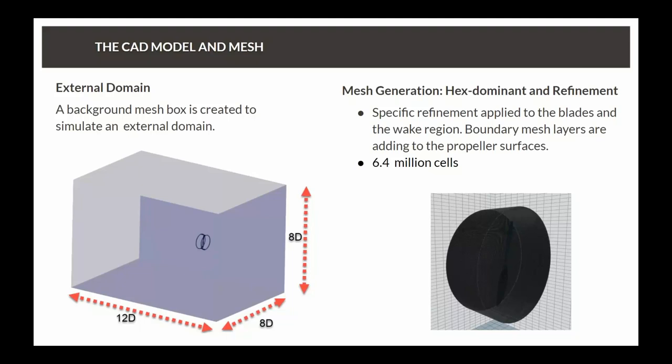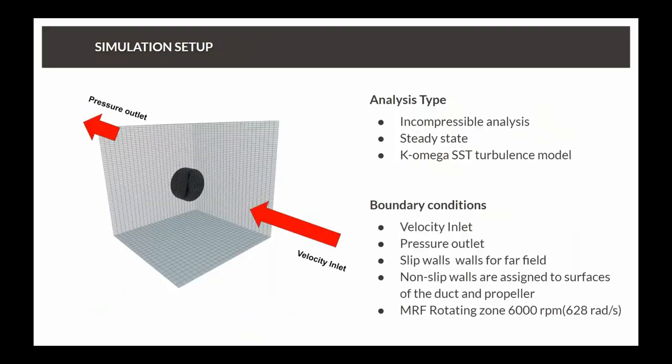The mesh is hex-dominant with specific refinements applied to the blades and wake region. We also include boundary layer mesh to capture boundary layer effects on the propeller. The mesh is roughly 6.4 million cells. We can create this mesh on multiple processors for speed, and simulate on multiple processors using cloud solving to optimize runtime.